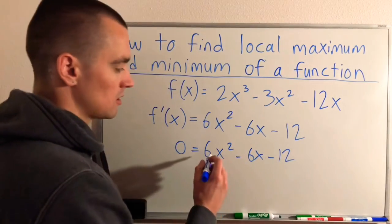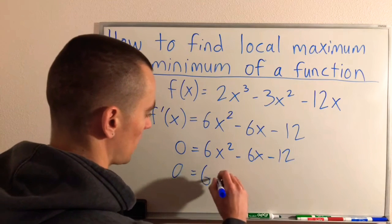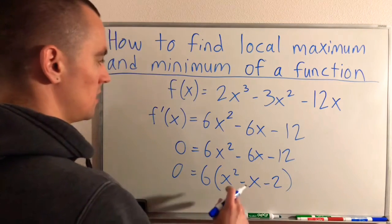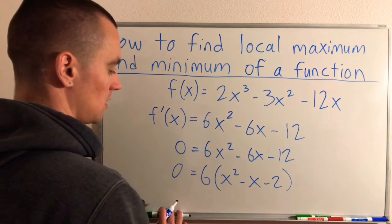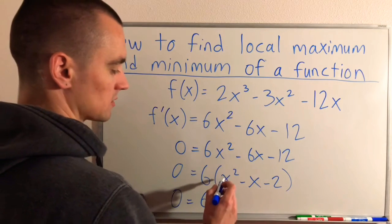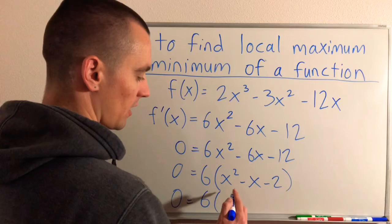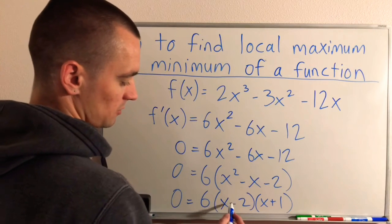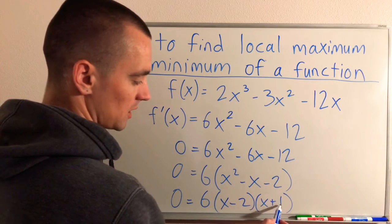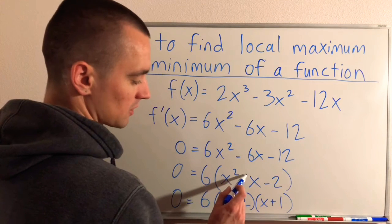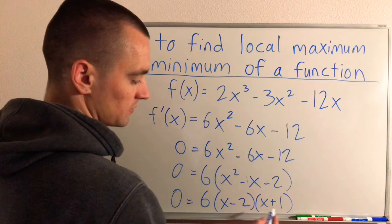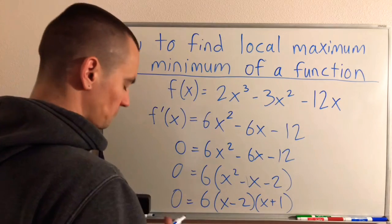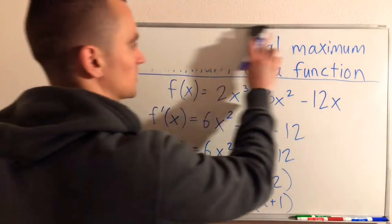The first thing we can do — notice all these terms have a 6 in it — so we can pull a 6 out and factor that out. That'll just leave us with x squared minus x minus 2. And then we can factor what's left in the parentheses. x squared minus x minus 2 factors to (x minus 2)(x plus 1). To double check: negative 2 and positive 1 add up to negative 1, which is the coefficient of our x term, and negative 2 times positive 1 gives us negative 2.